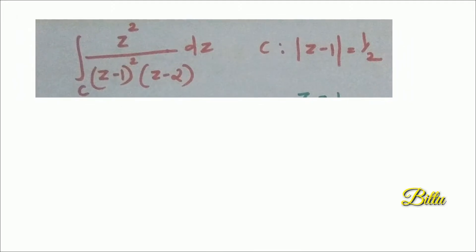Next, evaluate the integral over C of z² divided by (z−1)²(z−2) dz, where C is |z−1| = 2. This integral is different from the previous two because the given function has two singular points: 1 and 2. Check whether they lie inside or outside the given circle. The circle has center 1 and radius 2. Clearly the singular point 1 lies inside C, while 2 lies outside C.